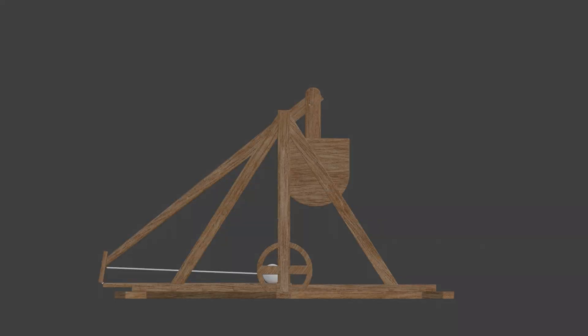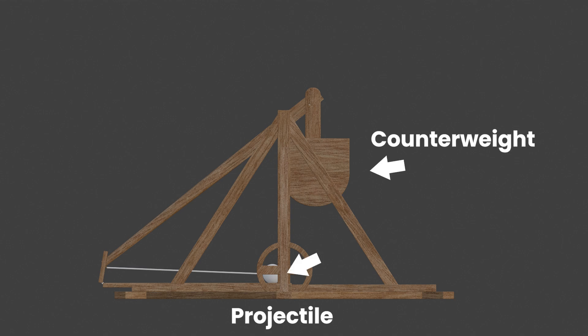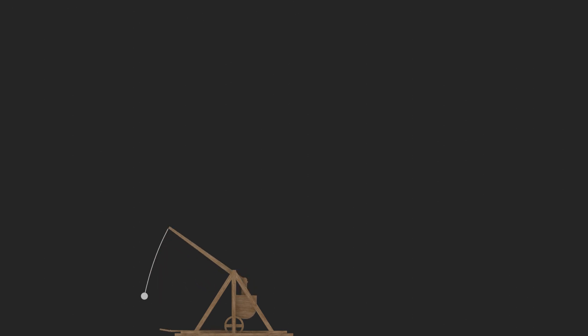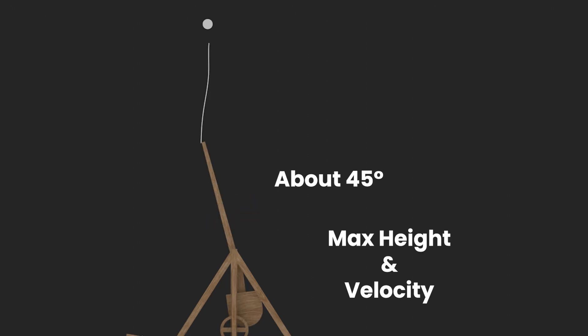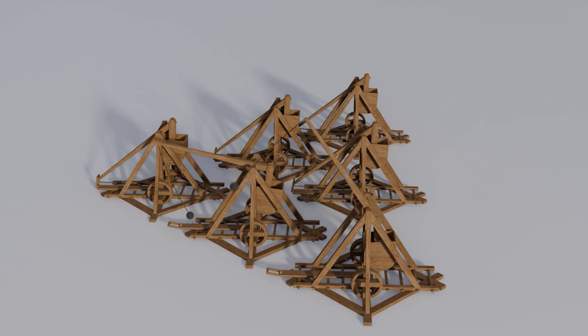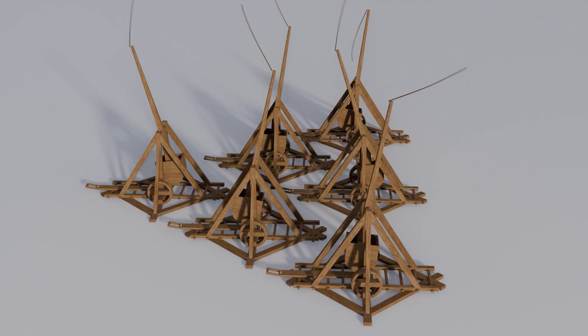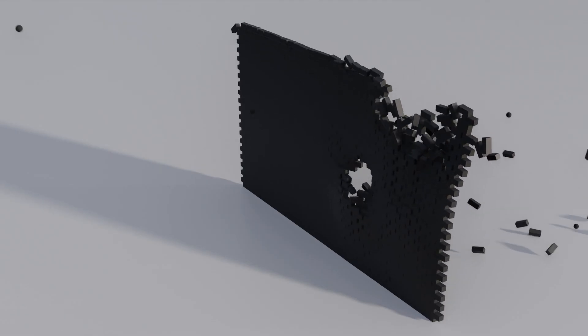There are four parts to any trebuchet: the counterweight, the projectile, the swing arm, and the sling. Basically, when the counterweight is released, it pulls the swing arm down, causing the sling to pull the projectile upwards, releasing at about a 45 degree angle for maximum height and velocity. So the physics behind trebuchets are actually pretty simple to recreate in Blender.